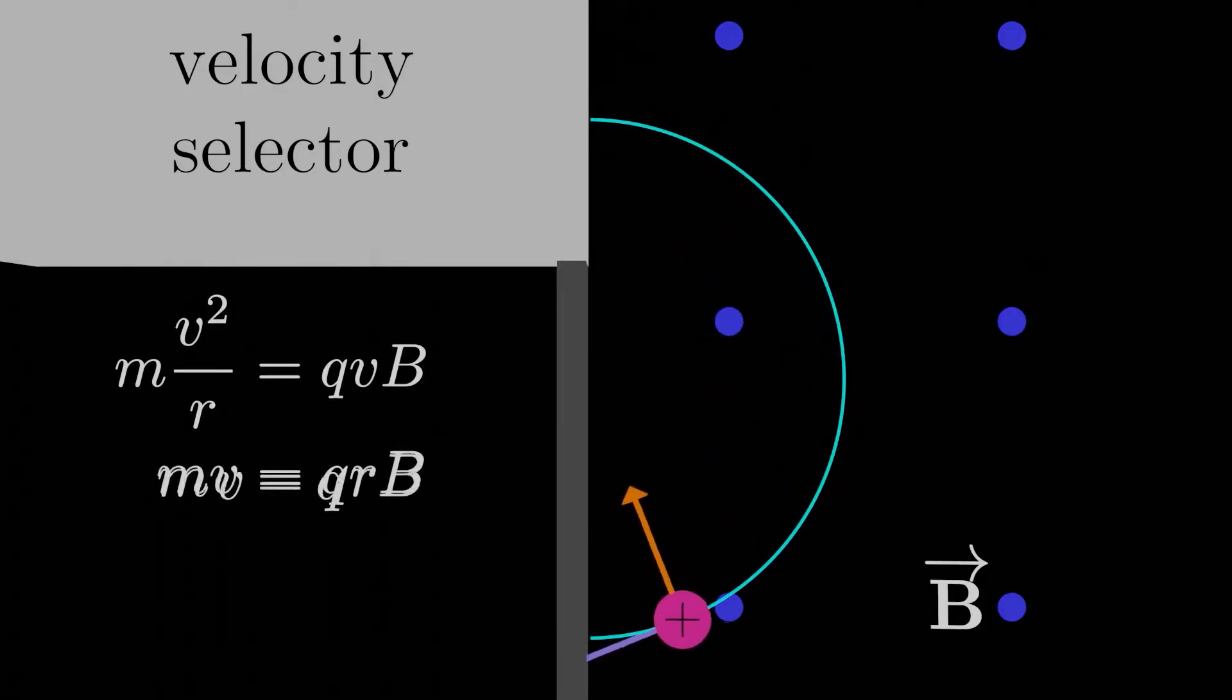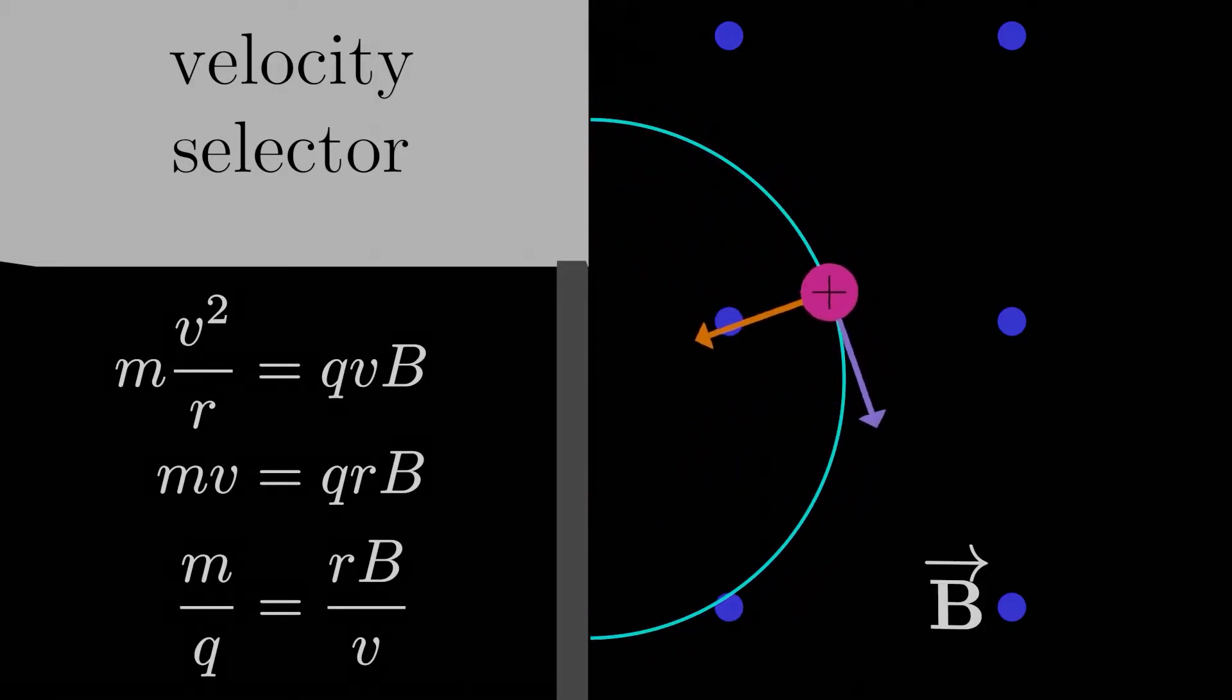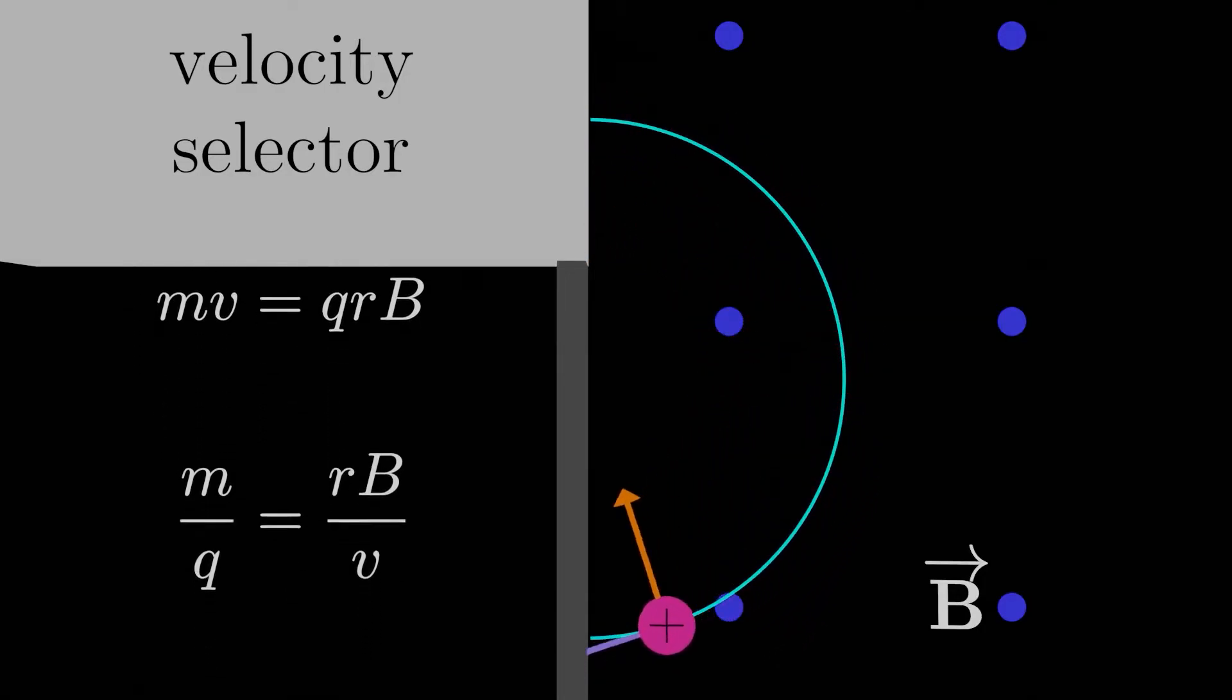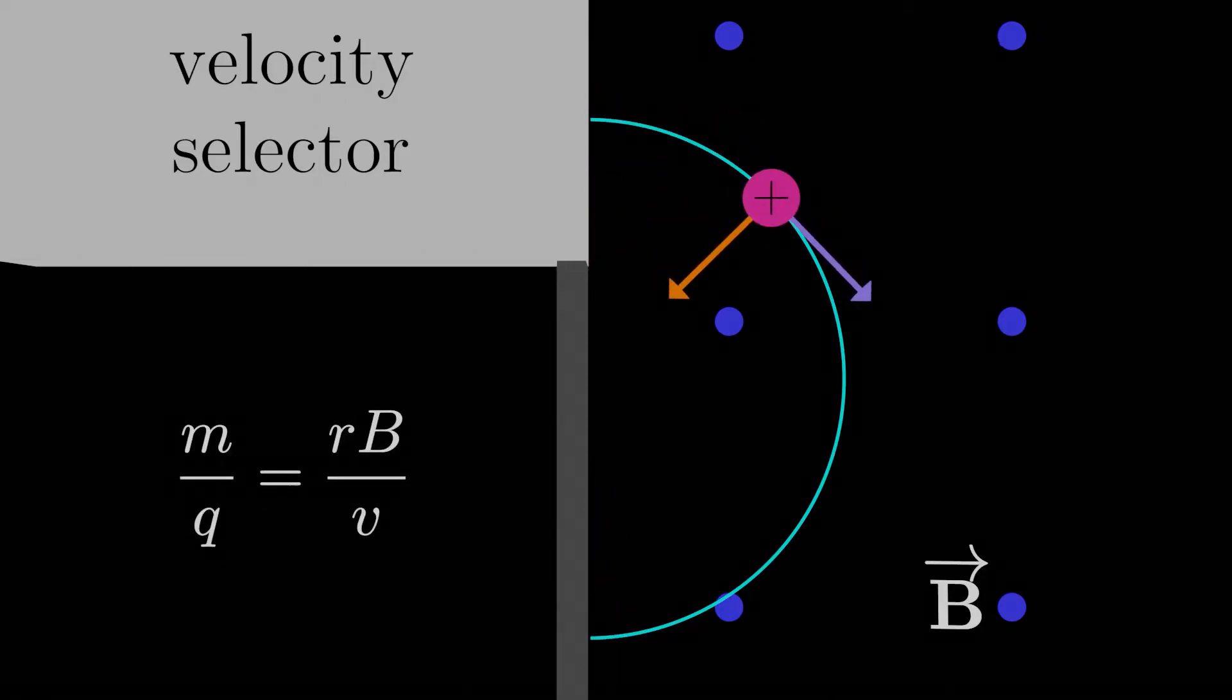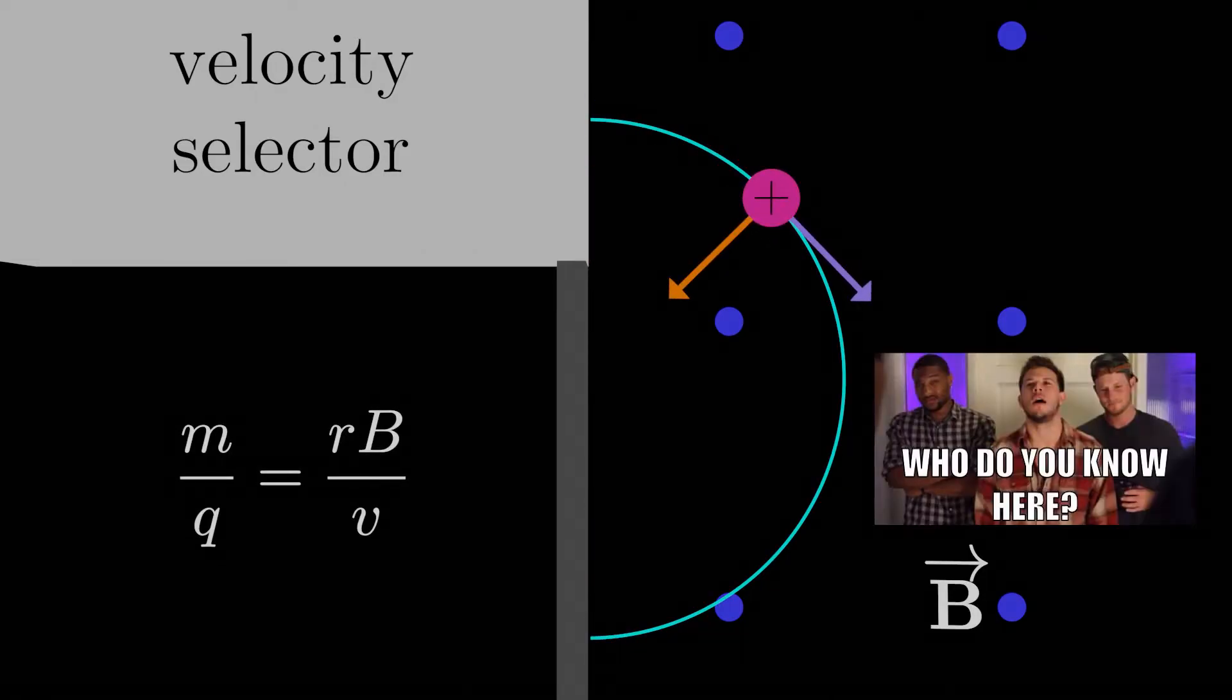Now, if we divide by q and v on both sides, we're left with this expression. The ratio of mass to charge of each particle is given by the radius times the magnetic field strength divided by the velocity. We can't really go any further with this equation, so let's stop for a second and ask ourselves, what do we know here?